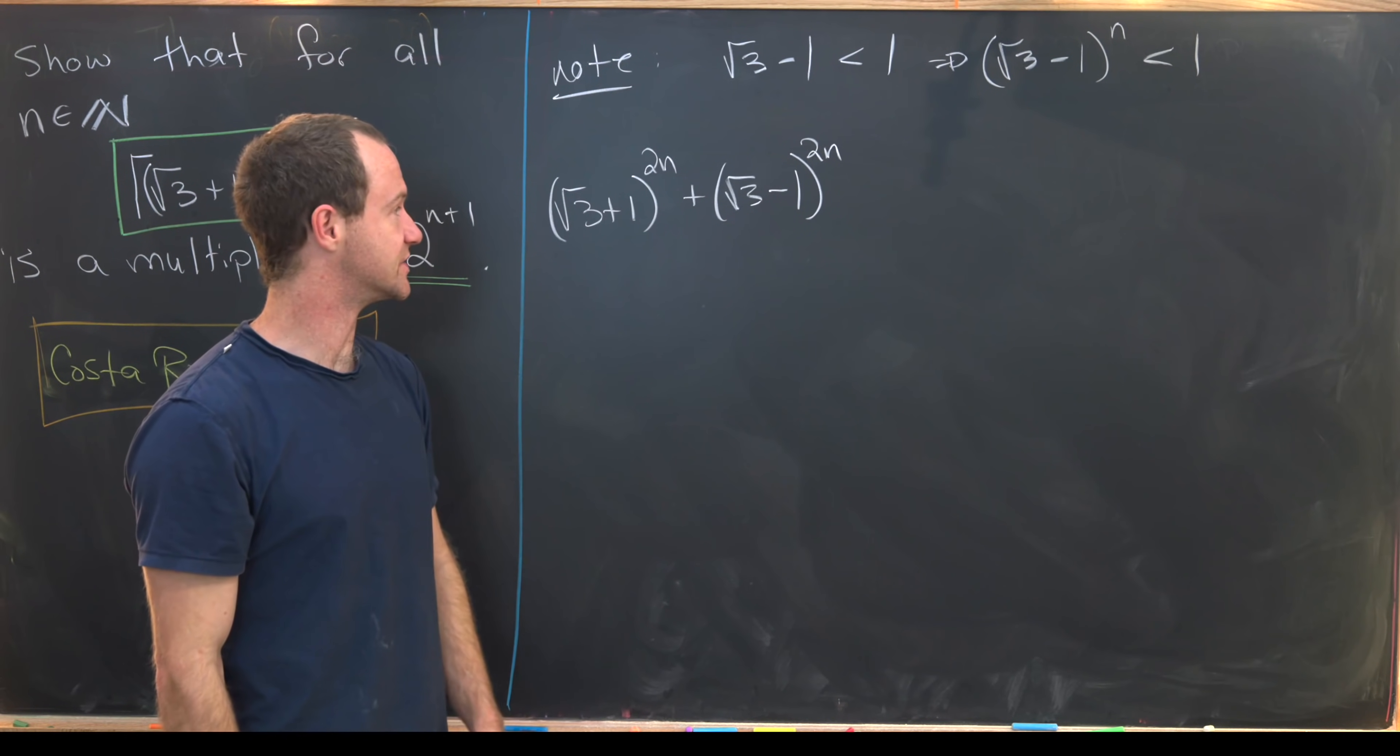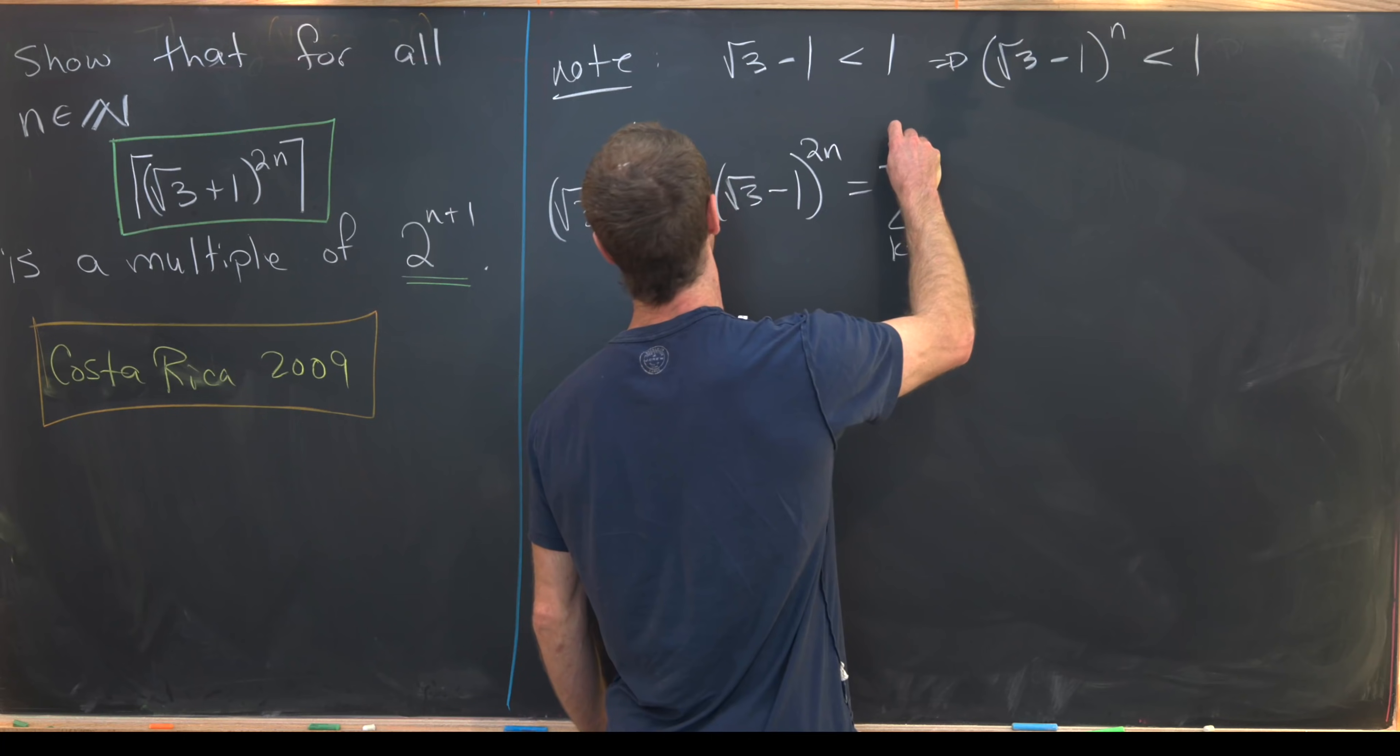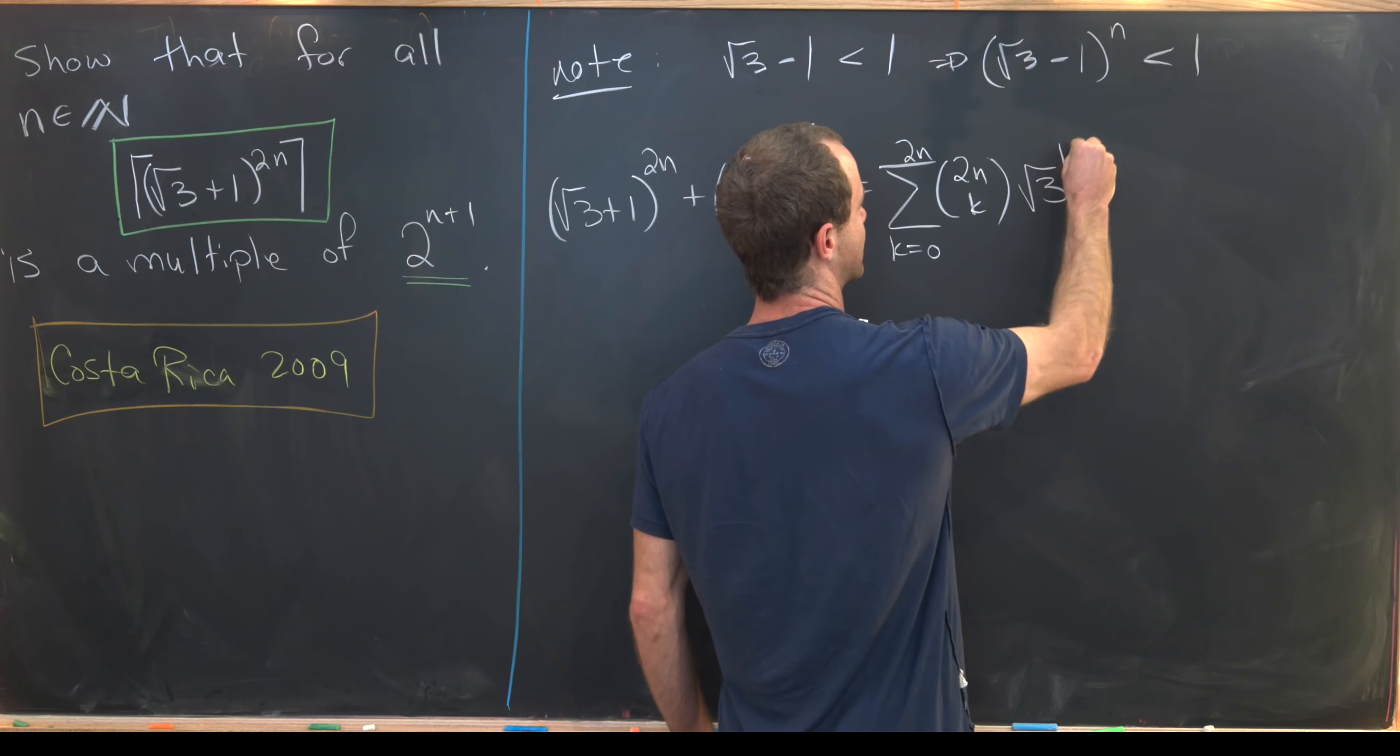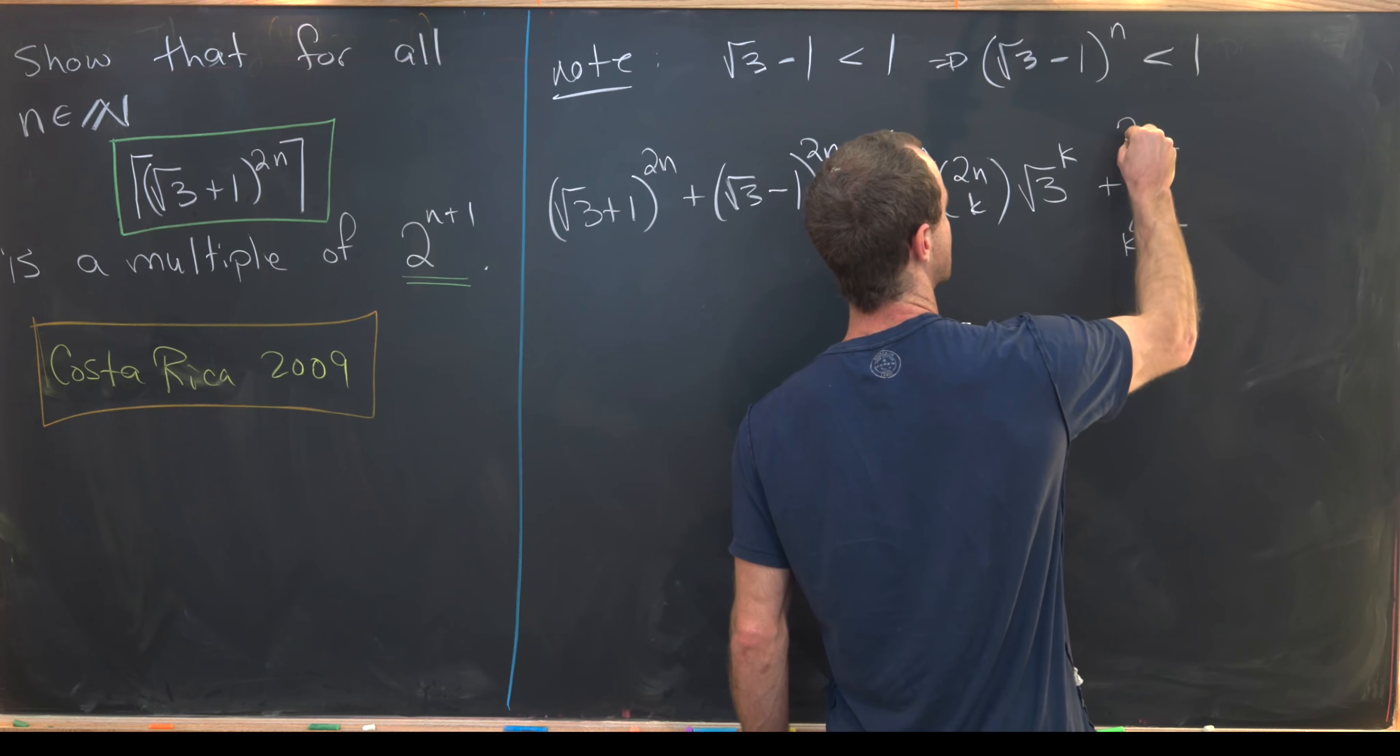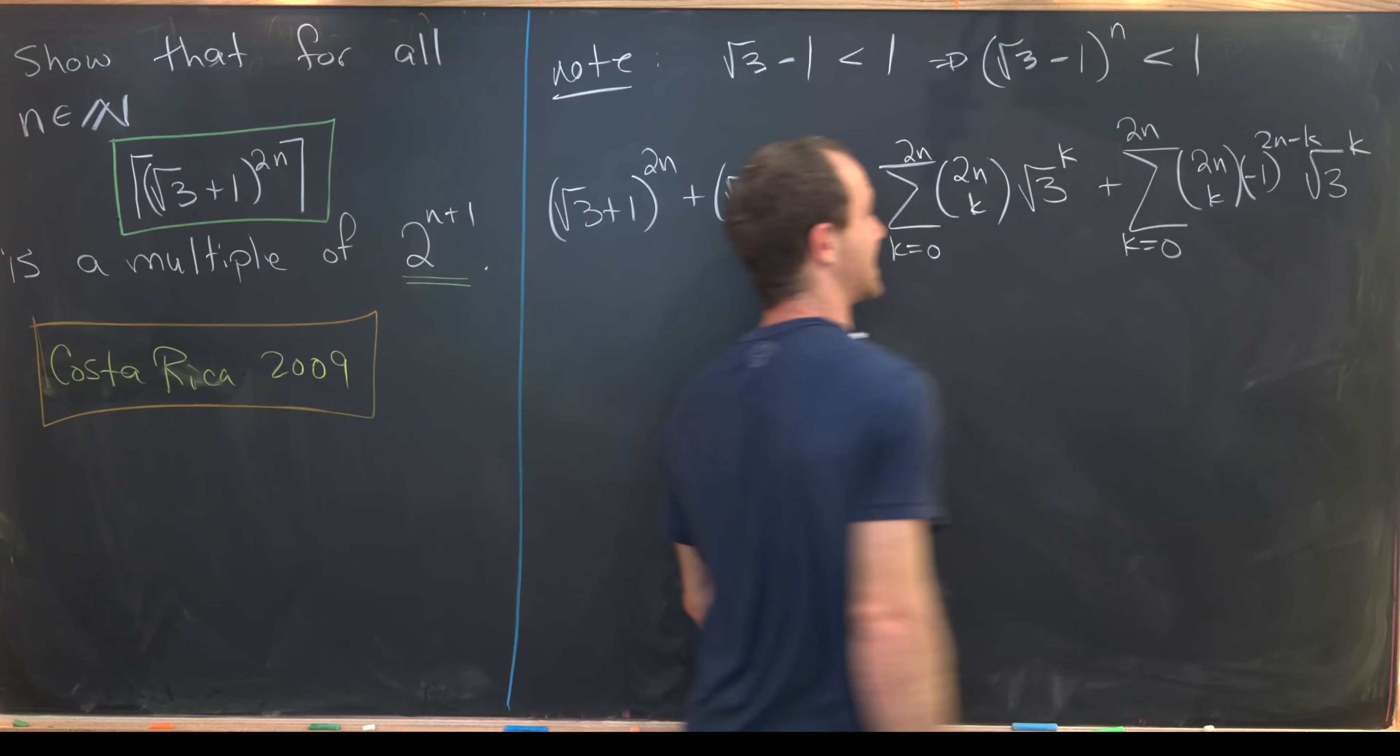Well, let's get to showing that this is an integer. So we'll expand each of these using a binomial formula. So that's going to give us the sum as k goes from 0 up to 2n of 2n choose k times the square root of 3 to the k. And then that'll be plus the sum as k goes from 0 to 2n of 2n choose k minus 1 to the 2n minus k, the square root of 3 to the k.